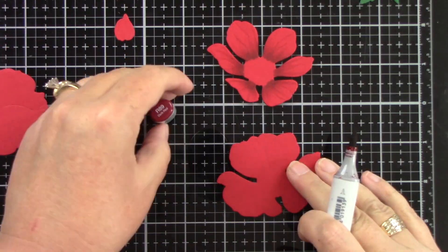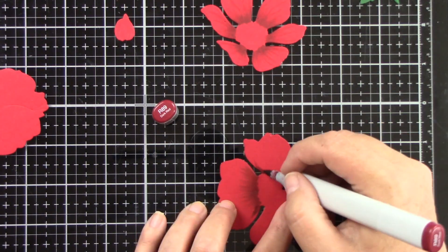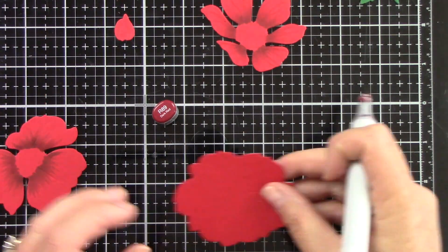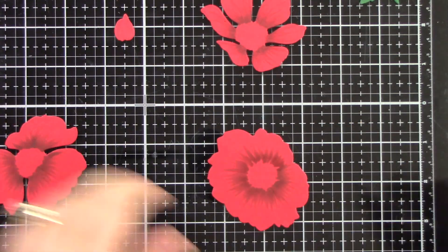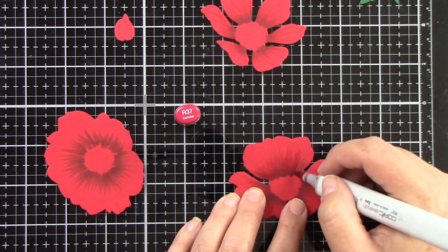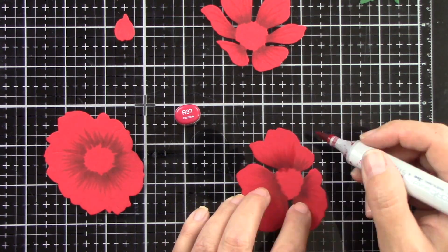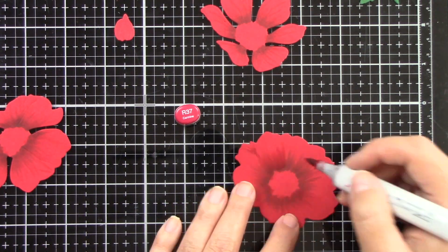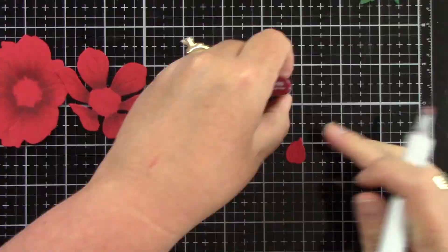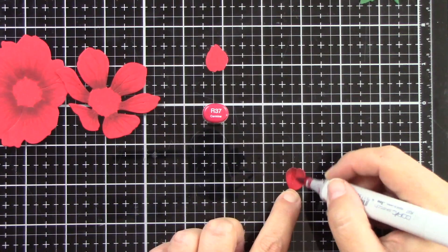Then I'm going to come in with the R37 which is about the same color as my colored cardstock and I'm going to go back over that, flicking out a little bit past that R89, blending it out and kind of drawing in some of the embossed parts of the petals. This is going to add some nice shading to the centers of our petals.